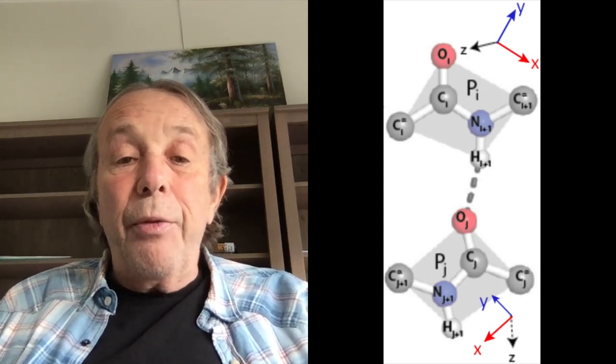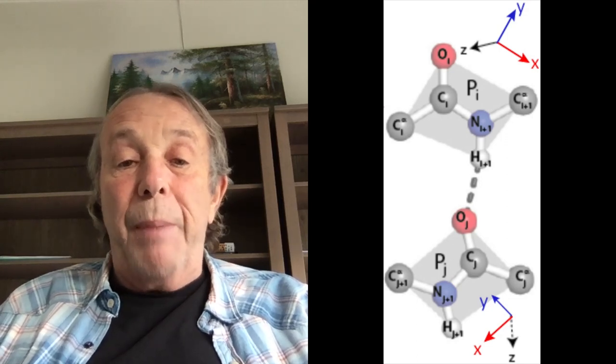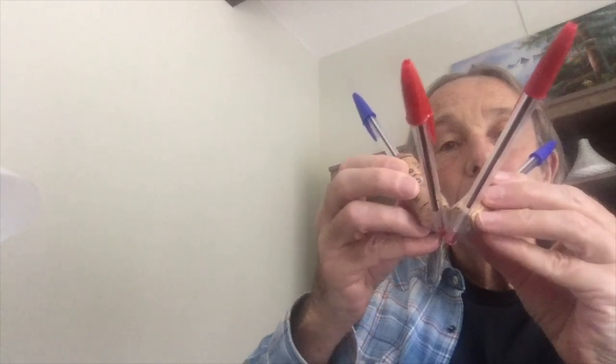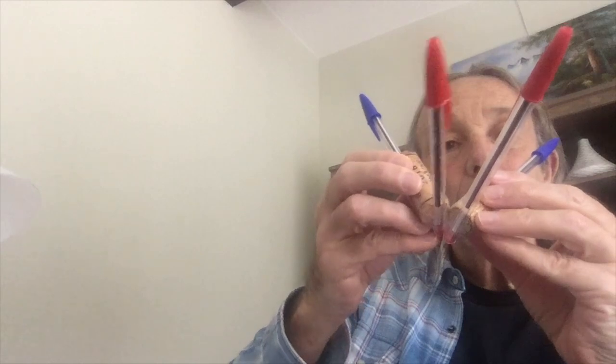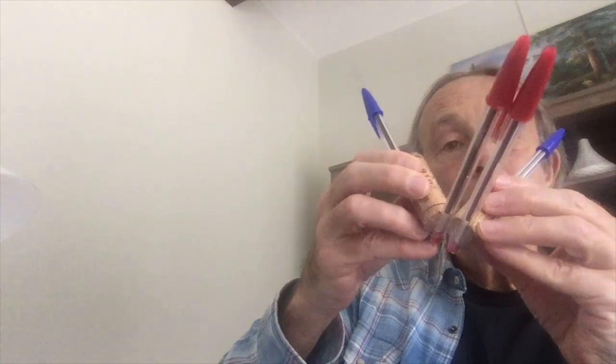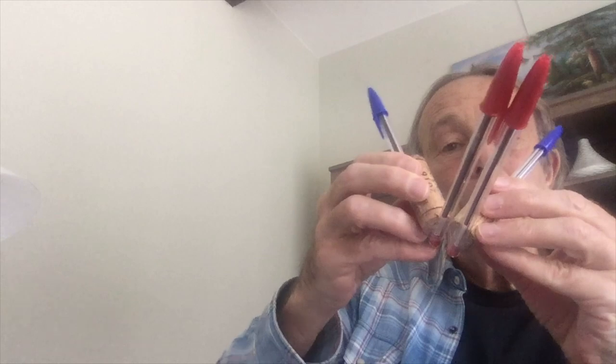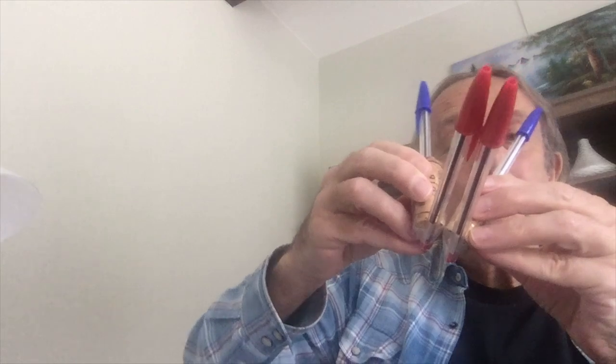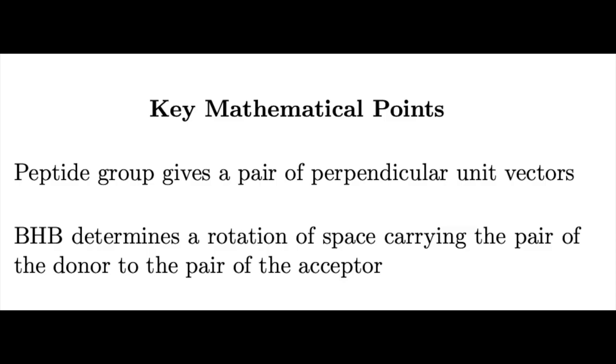There is then a pair of red-blue vectors, one from the donor and one from the acceptor peptide groups. For any pair of pairs of such red-blue vectors, there is a unique rotation of space carrying the first one to the second one. As I indicate here with my primitive visual aid, you simply first rotate the first red vector to agree with the second one, and then rotate the first blue vector around the line that now contains both red vectors. This brings us to our second main mathematical point, that a backbone hydrogen bond determines a rotation of space.